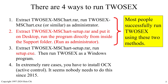There are four ways to run 2-Sex. First, extract the RAR file of the executable version and run the 2-Sex MS Chart .exe file as an administrator — this is the most common method. Second, you can extract the setup version and run the program from inside the support folder.